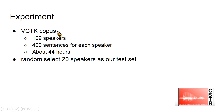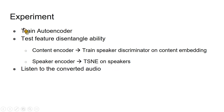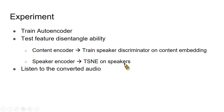Let's talk about the experiment. We conduct experiments on the VCTK Corpus, which comprises 109 speakers with 400 seconds per speaker, about 44 hours total. We randomly select 20 speakers as our testing set. First, we train an autoencoder as a general step for feature disentanglement-based models. Second, we test the feature disentanglement ability on both content and speaker encoders. For the content encoder, we train a speaker classifier on content embedding to ensure no speaker information remains. For the speaker encoder, we check whether different speaker embeddings separate well.